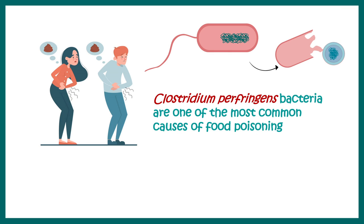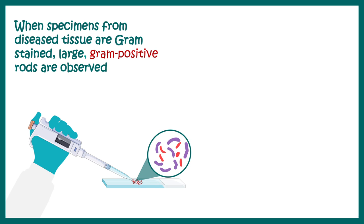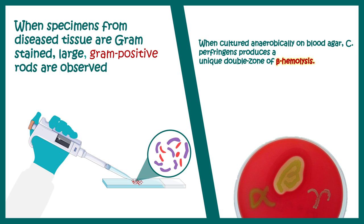Some strains of Clostridium perfringens can cause food poisoning in a severe form. As these are spore-forming bacteria, they can survive even in cooked food. The CDC estimates over 1 million food poisoning cases in the United States alone. When a specimen is obtained from a patient, gram staining will show gram-positive rods easily observed under the microscope. Alternatively, when cultured anaerobically on blood agar, C. perfringens produces a unique beta hemolysis pattern.